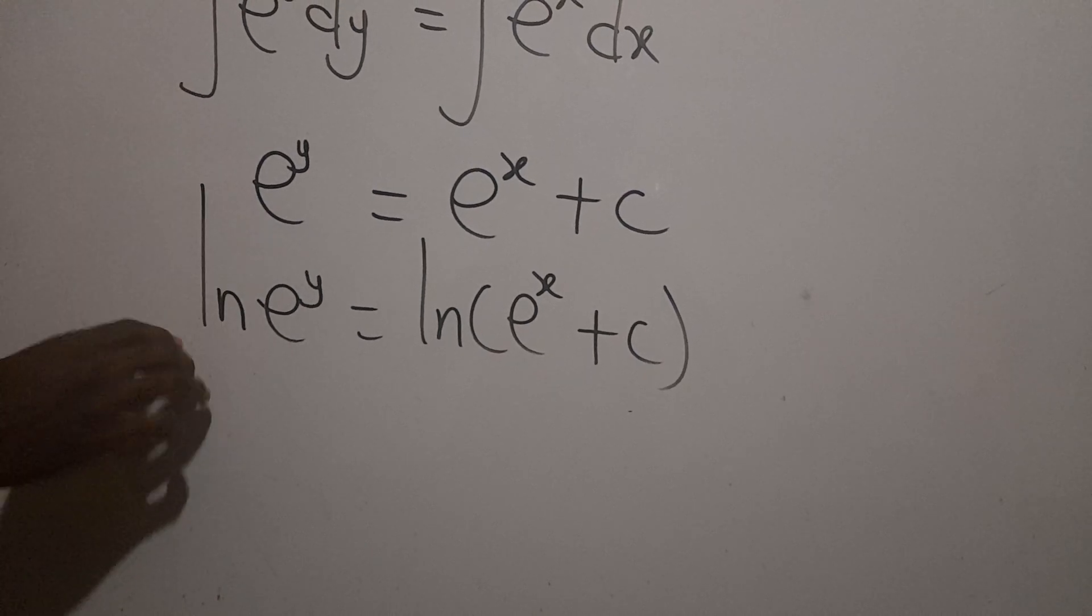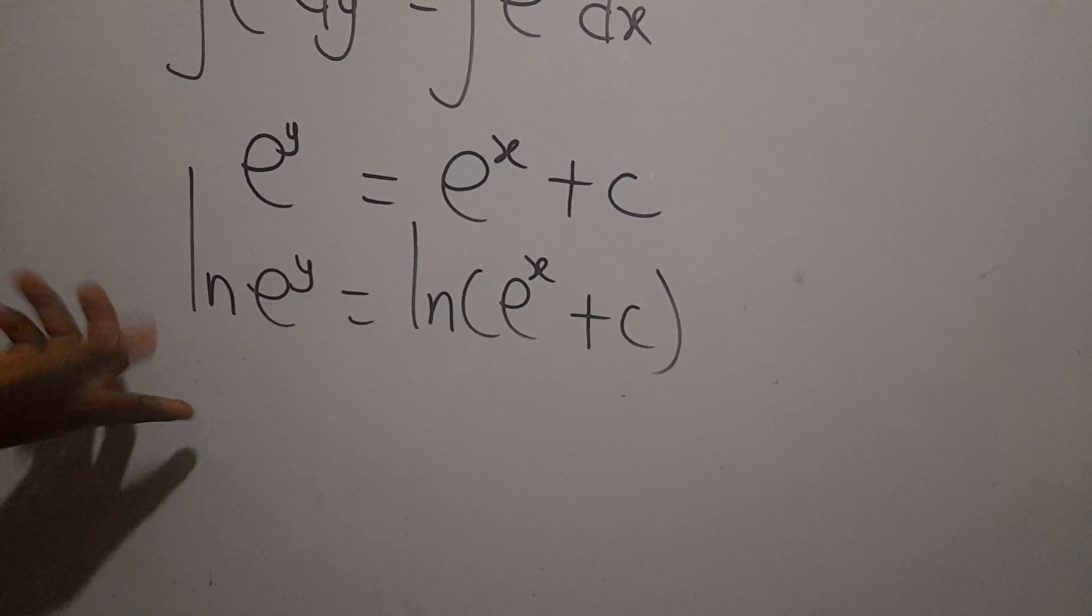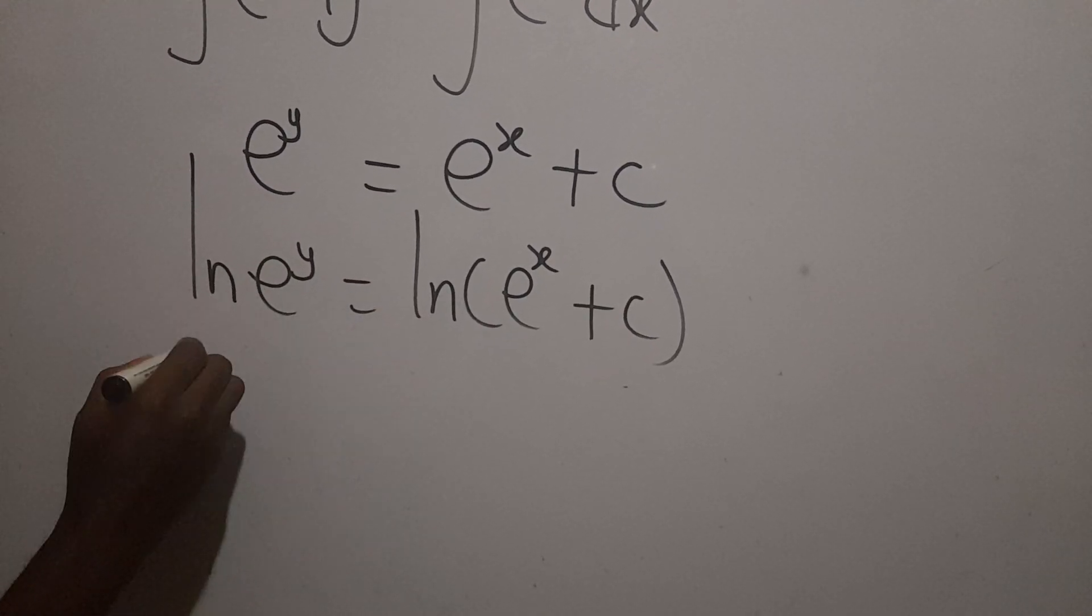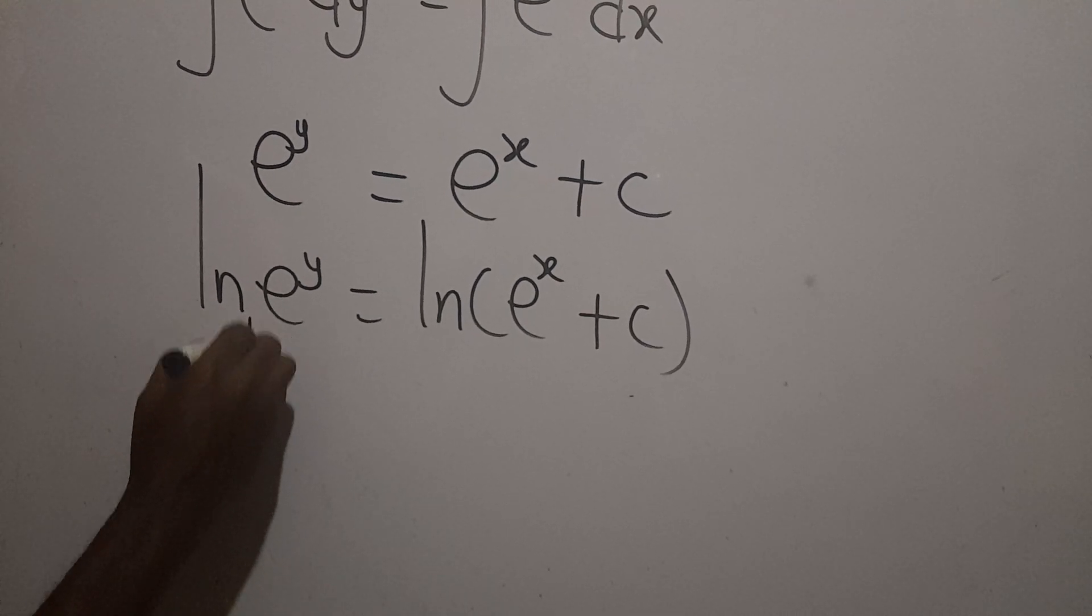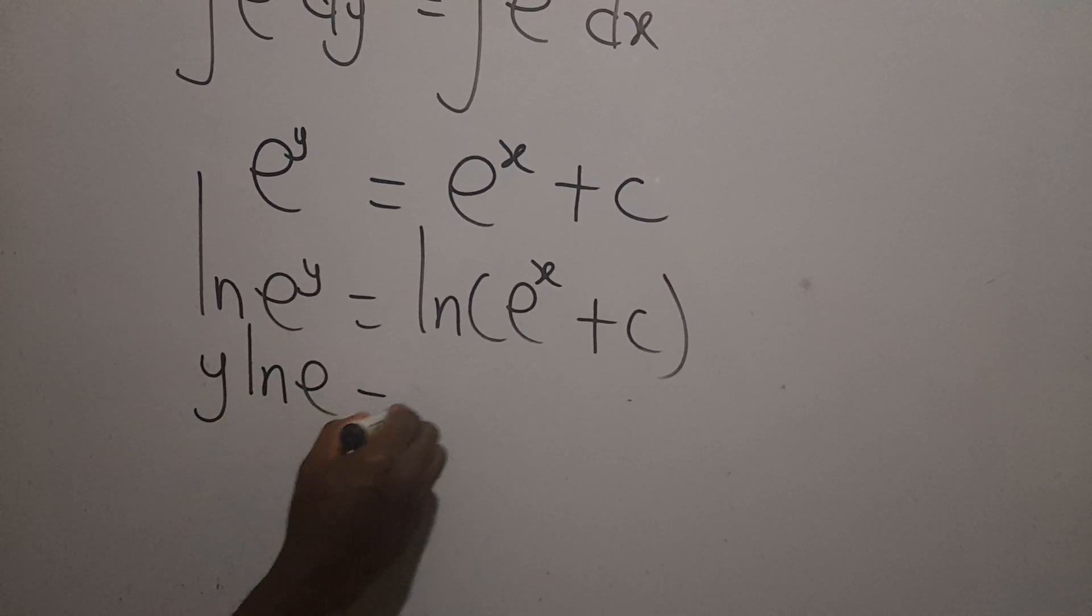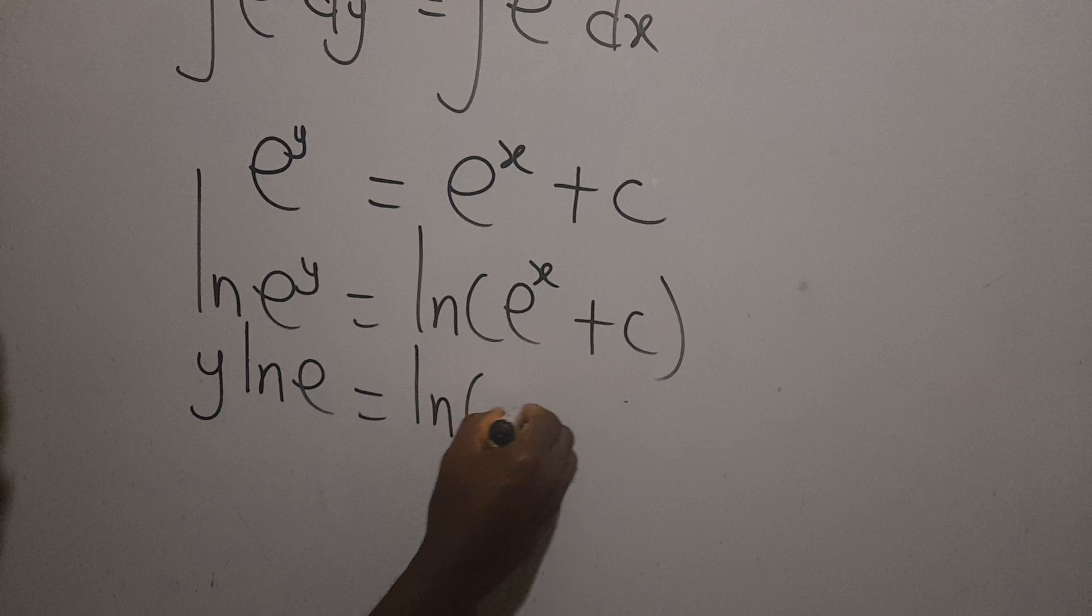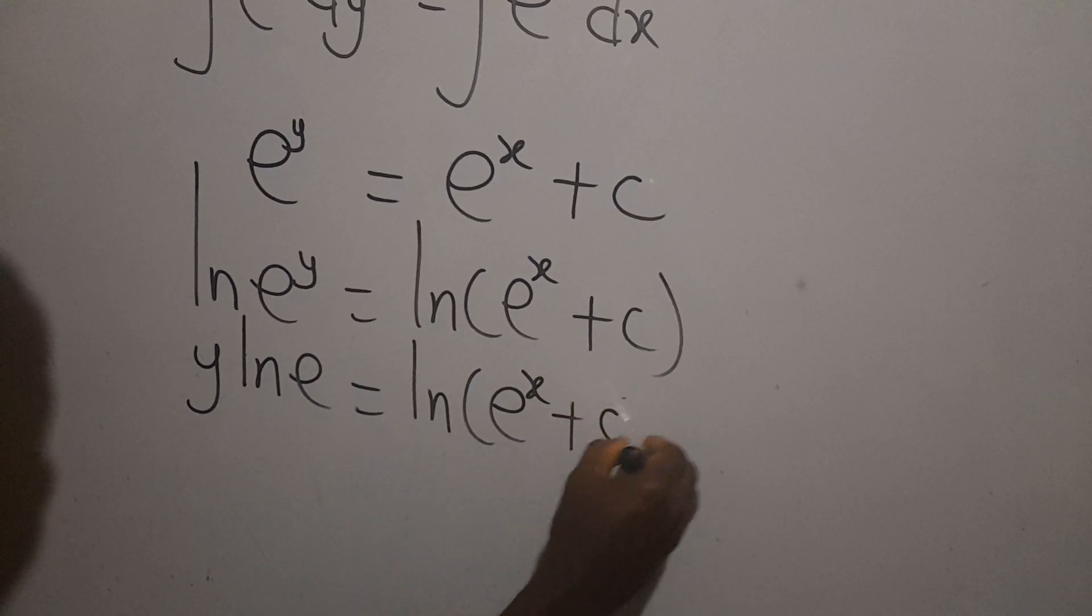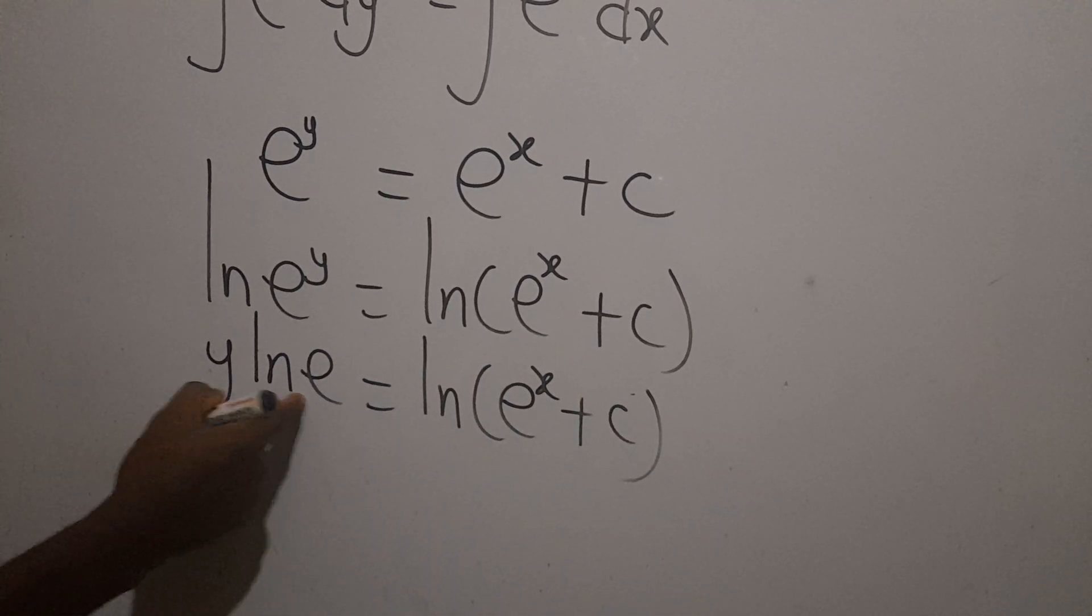ln is a log with natural base e then this is nothing but one. But we can rewrite this as y ln e equal to ln e exponent x plus c. So this is giving us one.